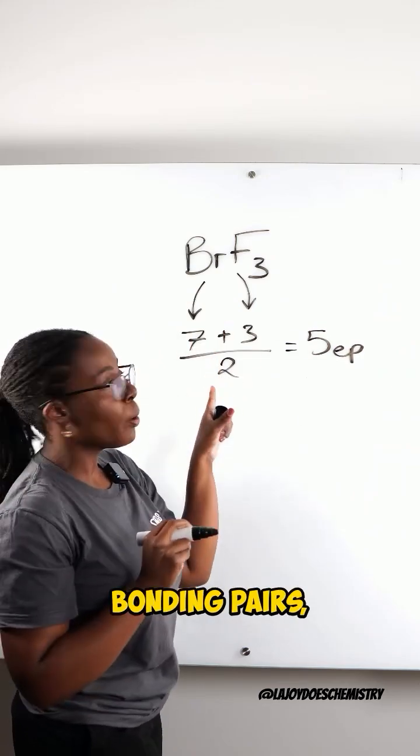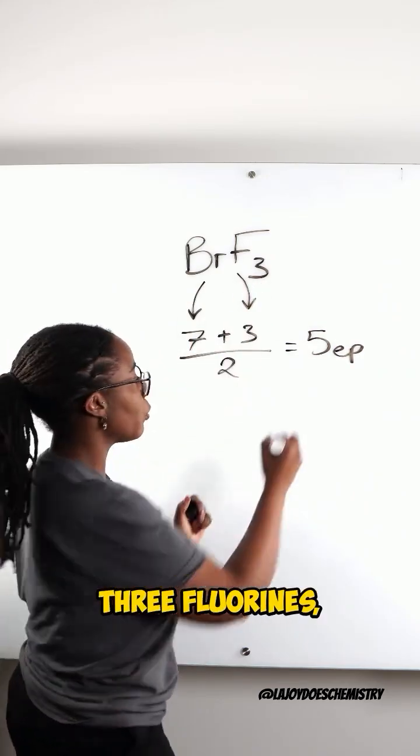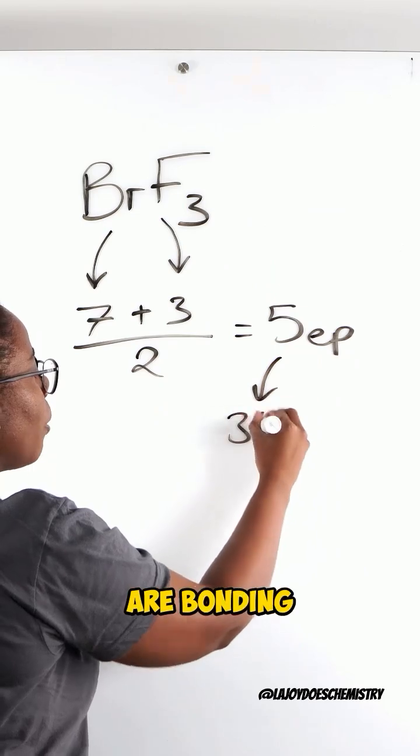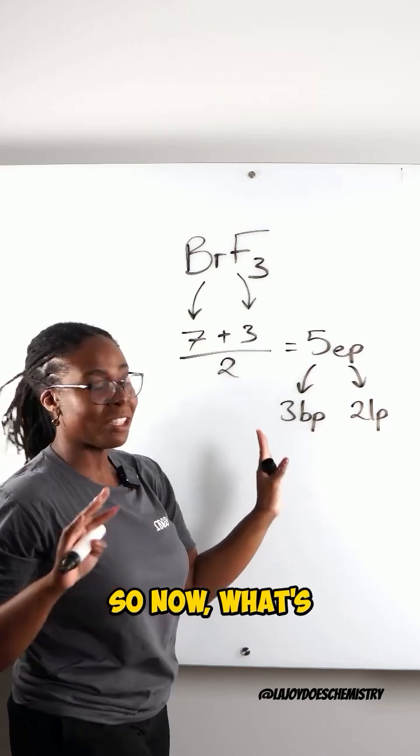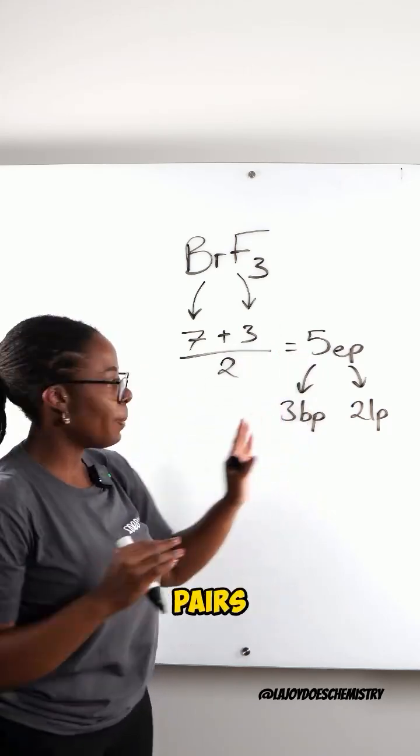Now, not all of those are bonding pairs because we only have 3 fluorines, which means that 3 are bonding pairs and the other 2 are lone pairs. So now, what's the shape?